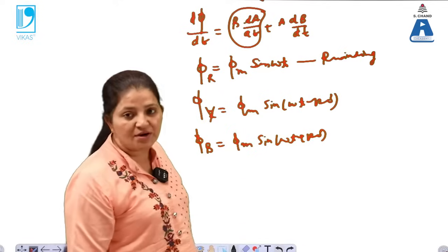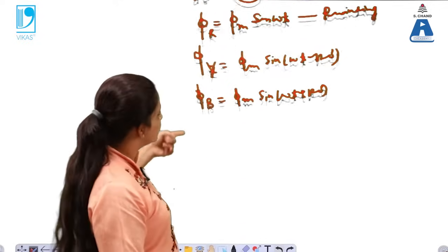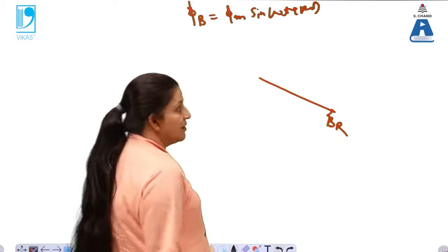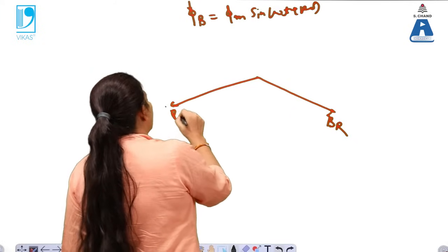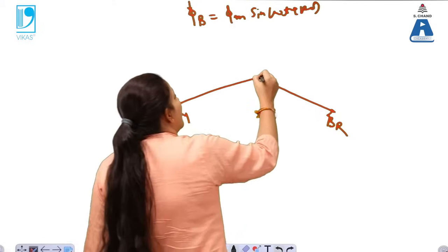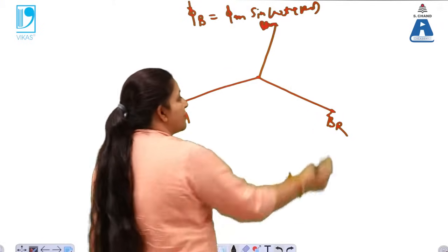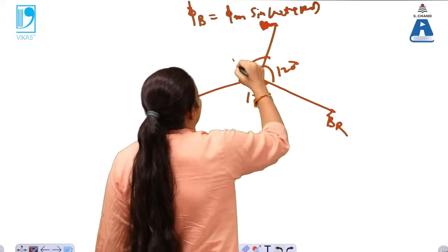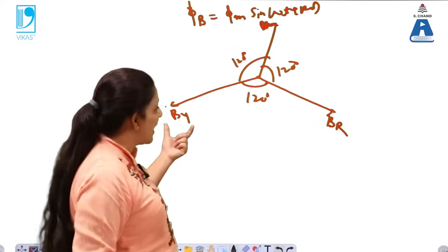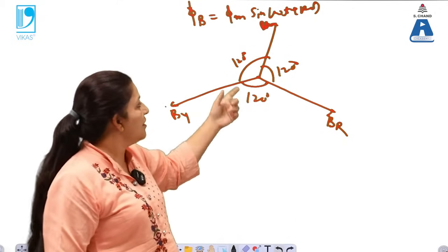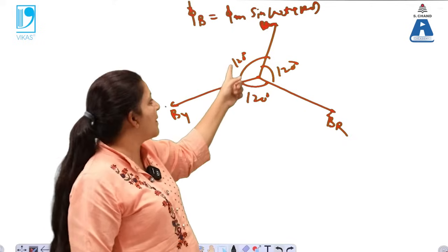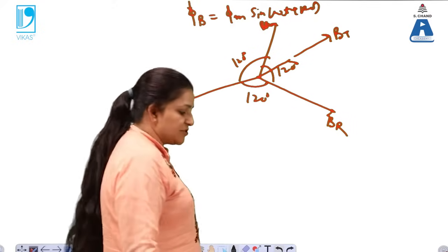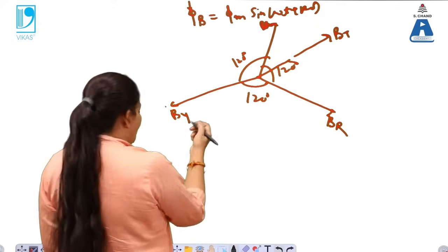The resultant of these three fluxes is seen as follows. B_r is the field developed in the R winding, B_y is the field developed in the Y winding, and B_b is the field developed in the blue winding. The angle between each is 120°. The Y winding lags behind R by 120°, while the blue winding leads R by 120°. Their resultant is represented by B_t, which is the total field.